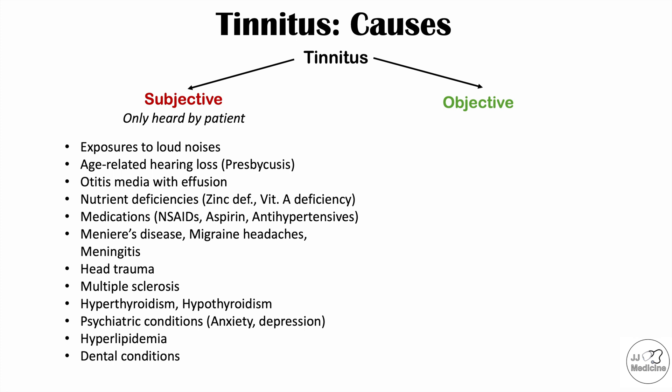Age-related hearing loss, also known as presbycusis, is another common cause. So exposure to loud noises and age-related hearing loss are the most common causes. Other causes include otitis media with effusion (middle ear infection), certain nutrient deficiencies like zinc deficiency and vitamin A deficiency, certain medications — particularly NSAIDs like ibuprofen, aspirin use, and antihypertensives.